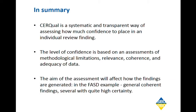To summarize: CIRQL is a systematic and transparent way of assessing how much confidence to place in an individual review finding, considering four components — methodological limitations, relevance, coherence, and adequacy of data. The aim of the assessment will affect how the findings are generated and the confidence placed in them. In our example, we generated coherent findings, several with quite high certainty.